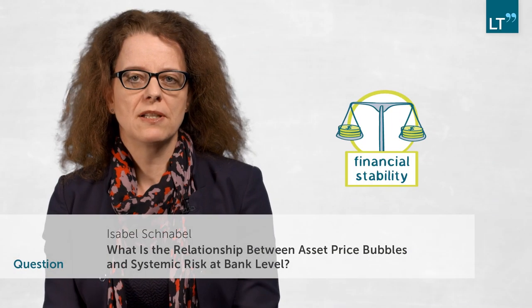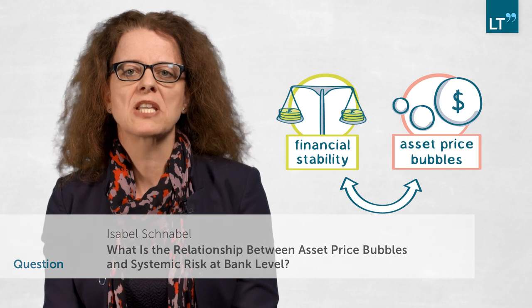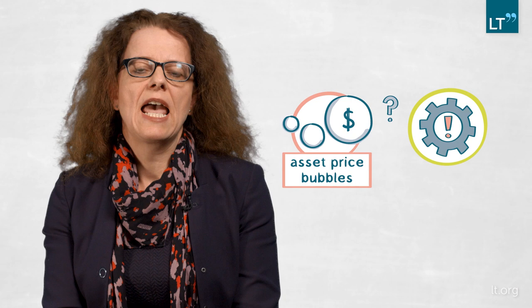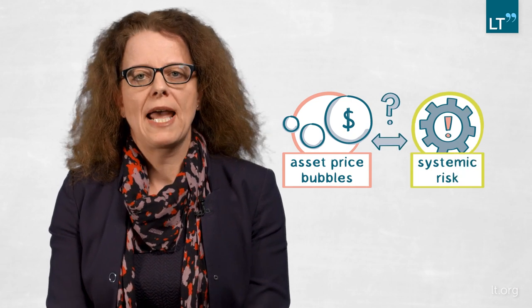In this paper we analyze the relationship between financial stability and asset price bubbles. What distinguishes our paper from existing research is that we are taking the analysis to a microeconomic level, looking at individual banks rather than macroeconomic aggregates. We know from the literature that some financial bubbles lead to severe financial crises, but others don't, and we want to better understand where this comes from. Our research question is: what is the relationship between asset price bubbles and systemic risk when looking at the bank individual level?